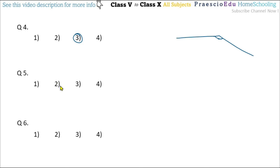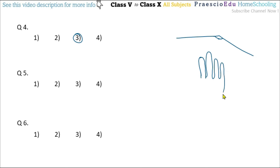Question number 5: which type of angle is formed between two adjacent fingers other than the thumb of an expanded hand? Suppose this is a hand — we consider these four fingers, except the thumb. When the hand is stretched, the angle formed between adjacent fingers is an obtuse angle. So option number 1 is the correct answer.